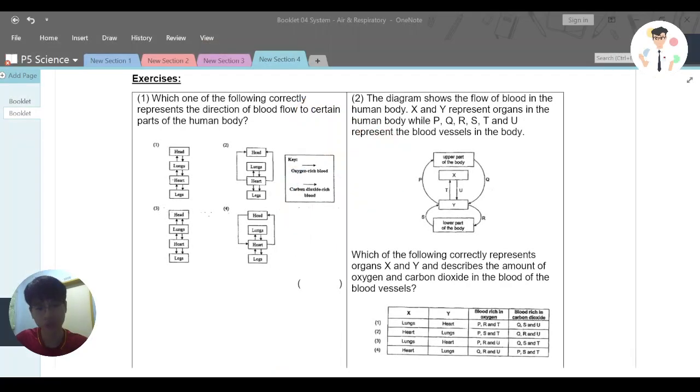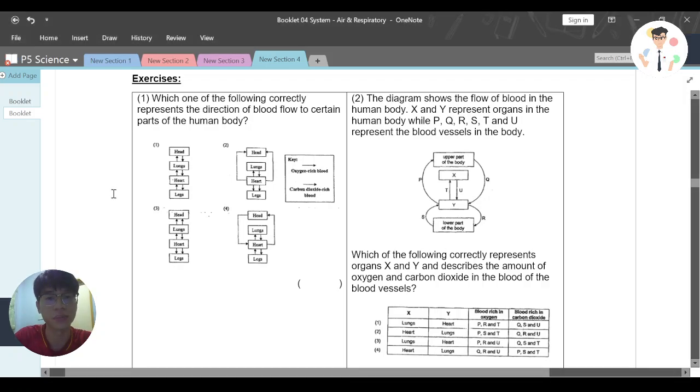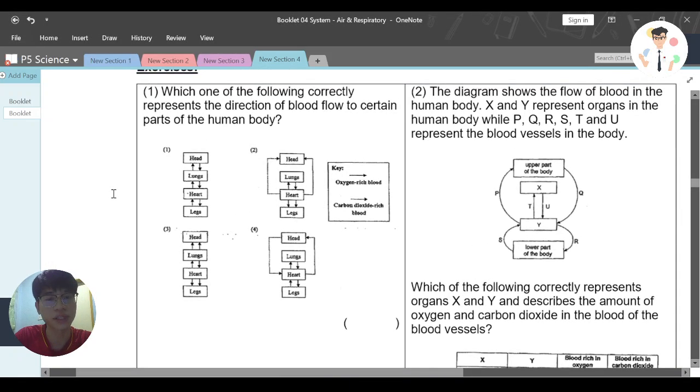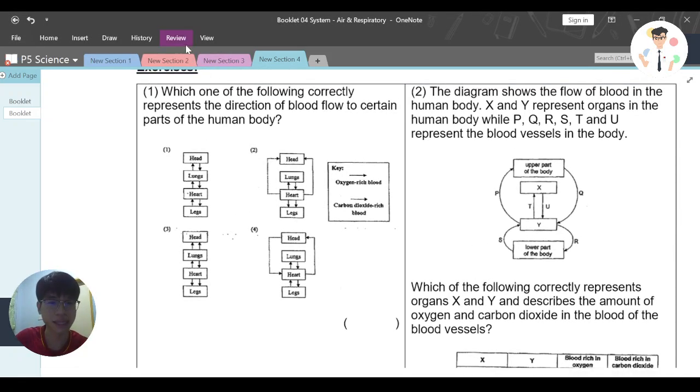Welcome back to GeoClass, and now we're looking at this question number one. This question here says which one of the following correctly represents the direction of blood flow to certain parts of the human body?